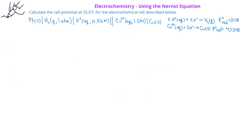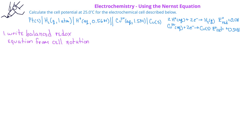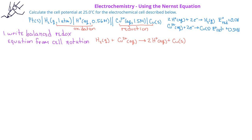In this problem, we're asked to calculate the cell potential for an electrochemical cell described by the cell notation below. We're given the reduction potentials for the two half reactions, and the concentrations of the gases and aqueous ions. We recall from cell notation that the oxidation (anode) half reaction is on the left, and the cathode (reduction) half reaction is on the right. This gives us: hydrogen gas reacts with copper 2+ ions to produce two hydrogen ions and copper solid. From the copper ions being reduced to copper metal, we have two electrons transferred, so N equals 2.